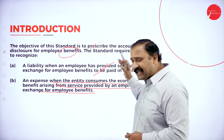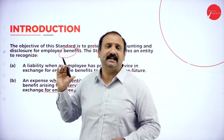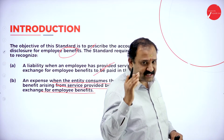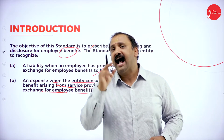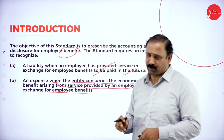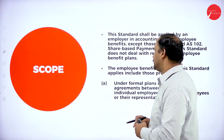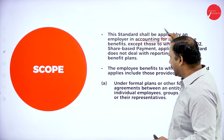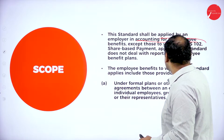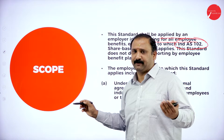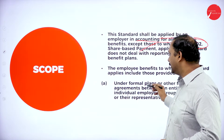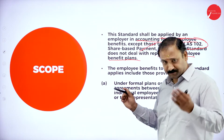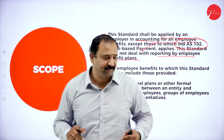Overall, for any kind of services or work provided by an employee towards the organization, it needs to be considered as a liability because the organization has to go forward and pay the price for it. This standard has been applied by the employer in the accounting for all employee benefits, except those under section 102, that is share-based payment, because that is a different standard altogether and this standard does not deal with share-based payment.